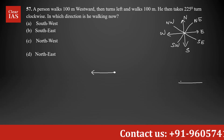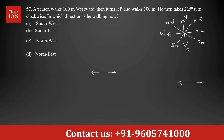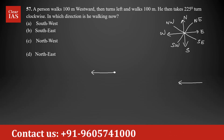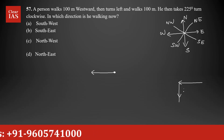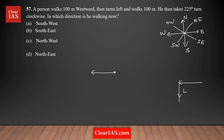If a person is moving towards the west direction and takes a left turn, he will be moving towards south. In case he takes a right turn, he'll be moving towards north. Keep in mind that left and right change with respect to the direction a person is moving. For example, if a person is moving towards east, this is going to be his left side and this is going to be his right side.